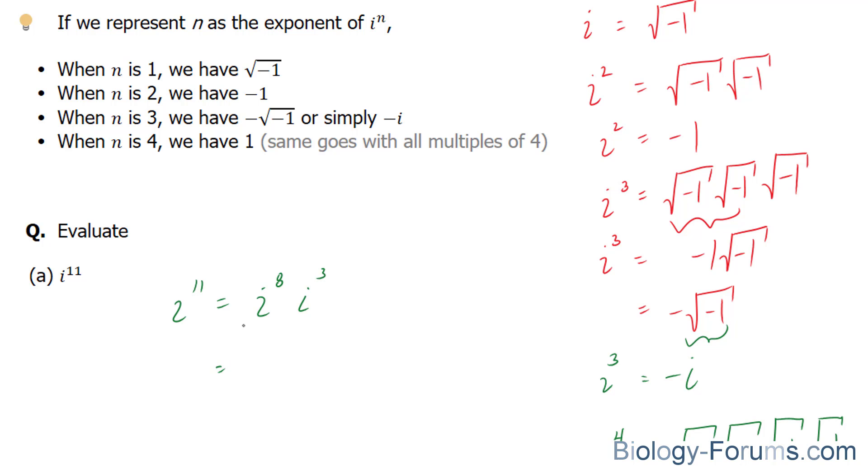i to the power of 8. 8 is a multiple of 4, so this reduces to 1. And i to the power of 3, we discovered, is equal to negative i. So, therefore, i to the power of 11 is the same as negative i.